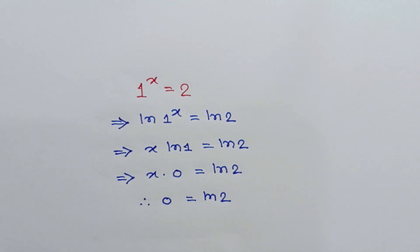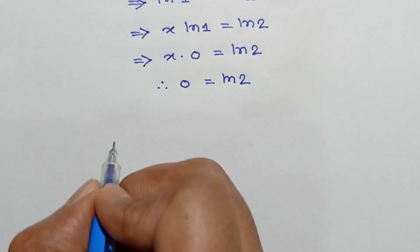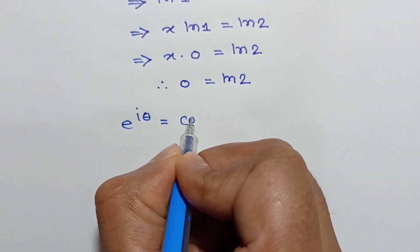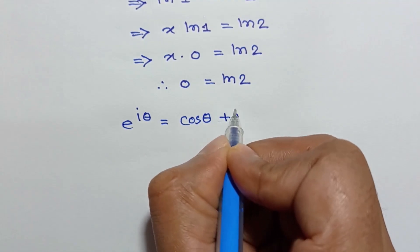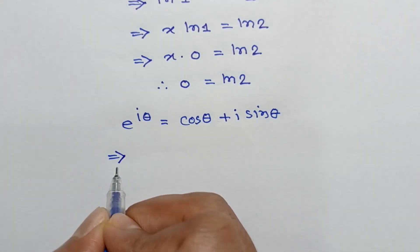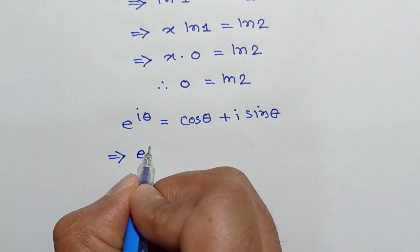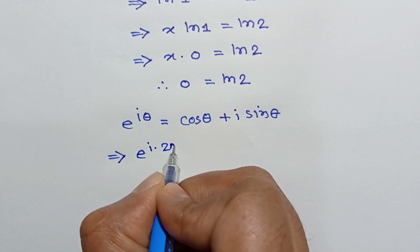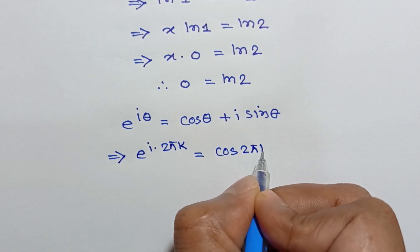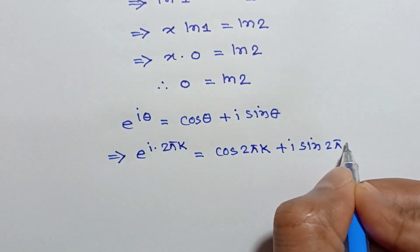Now let's try to find the complex solution of this equation. From Euler's theorem we know e to the power i theta is equal to cos theta plus i sin theta. Substituting theta equal to 2 pi k, we can write e to the power i times 2 pi k is equal to cos 2 pi k plus i sin 2 pi k.